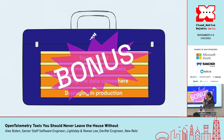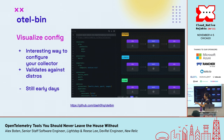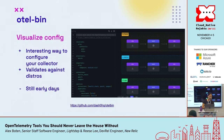There are some bonus tools that made it in last minute. Otelbin is a cool one that came to our attention recently — it's a way to configure, check, and validate your collector config, which is something end users really want. You might find this really handy. It is still in the early days and we didn't have enough time to get our dev environment set up with it, but it looks really cool.